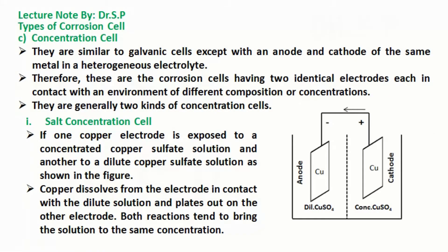Concentration Cell. Concentration cells are similar to galvanic cells except with an anode and cathode of the same metal in a heterogeneous electrolyte. Therefore, these are corrosion cells having two identical electrodes each in contact with an environment of different composition or concentration. There are generally two kinds of concentration cells: the salt concentration cell and the differential aeration cell.